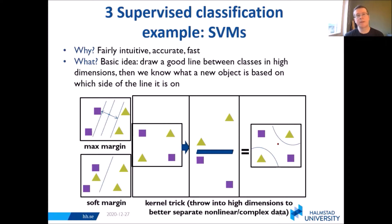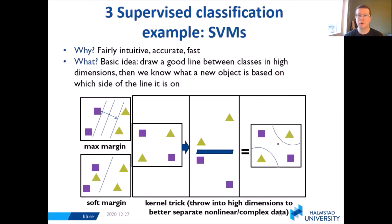What is it? The basic idea is that we try to draw a good line between classes in high dimensions. Then we know what a new object is based on which side of this line it falls on. The first concept is trying to maximize the margin — finding a decision boundary hyperplane as far as possible from the classes you're trying to separate, so it's most likely to classify new data points correctly.